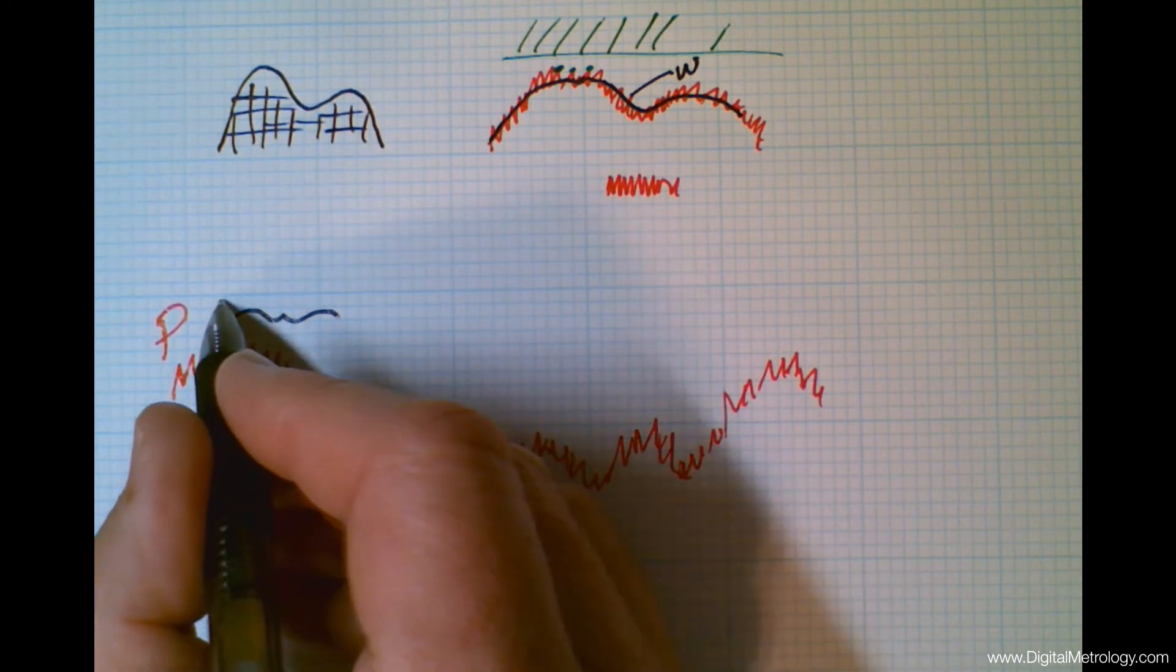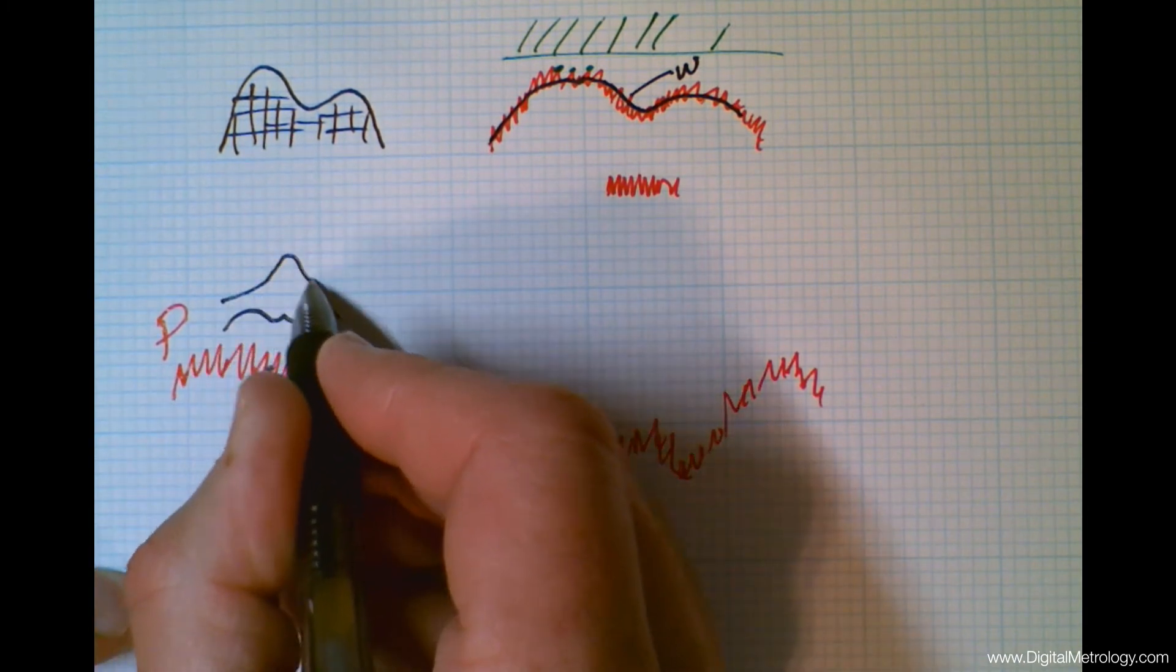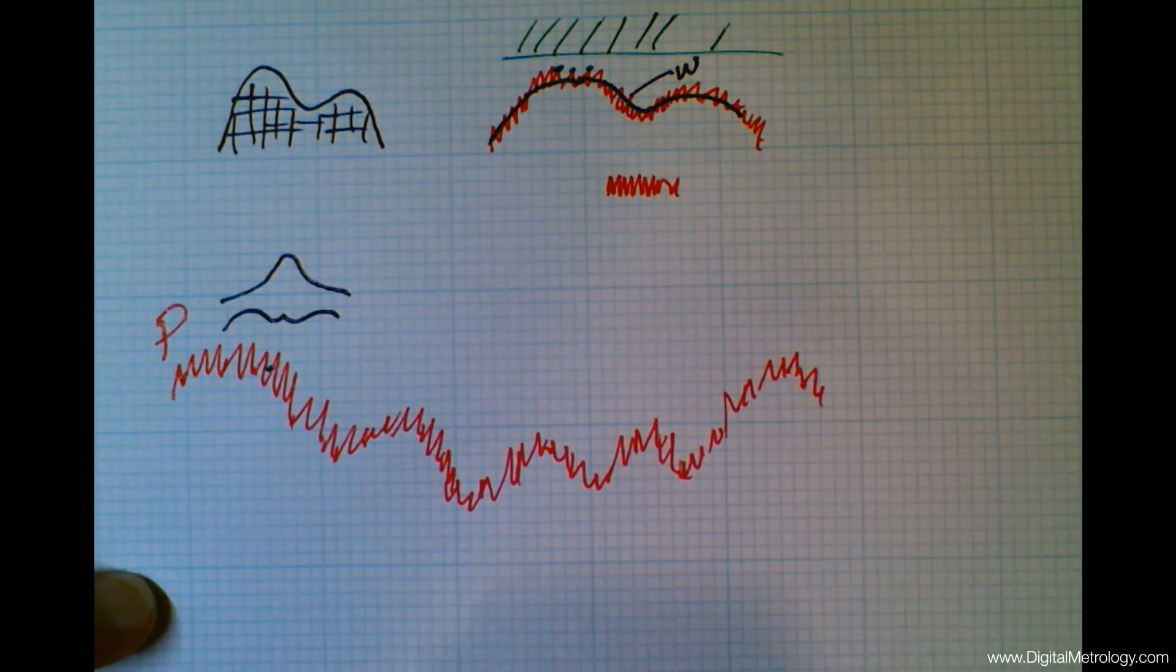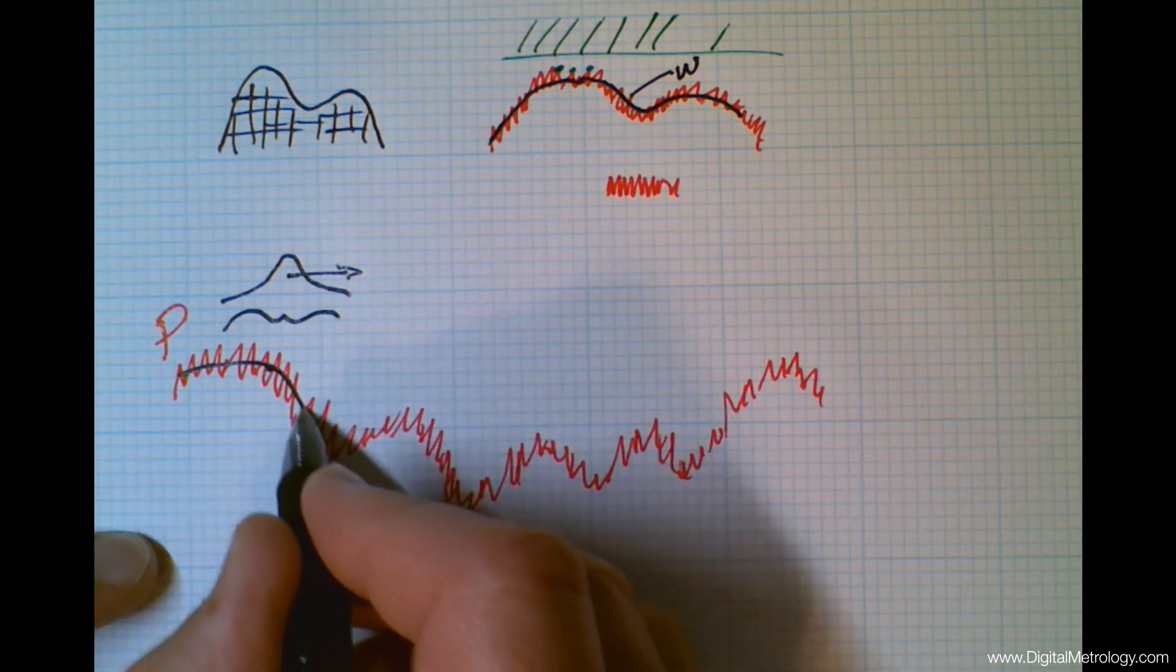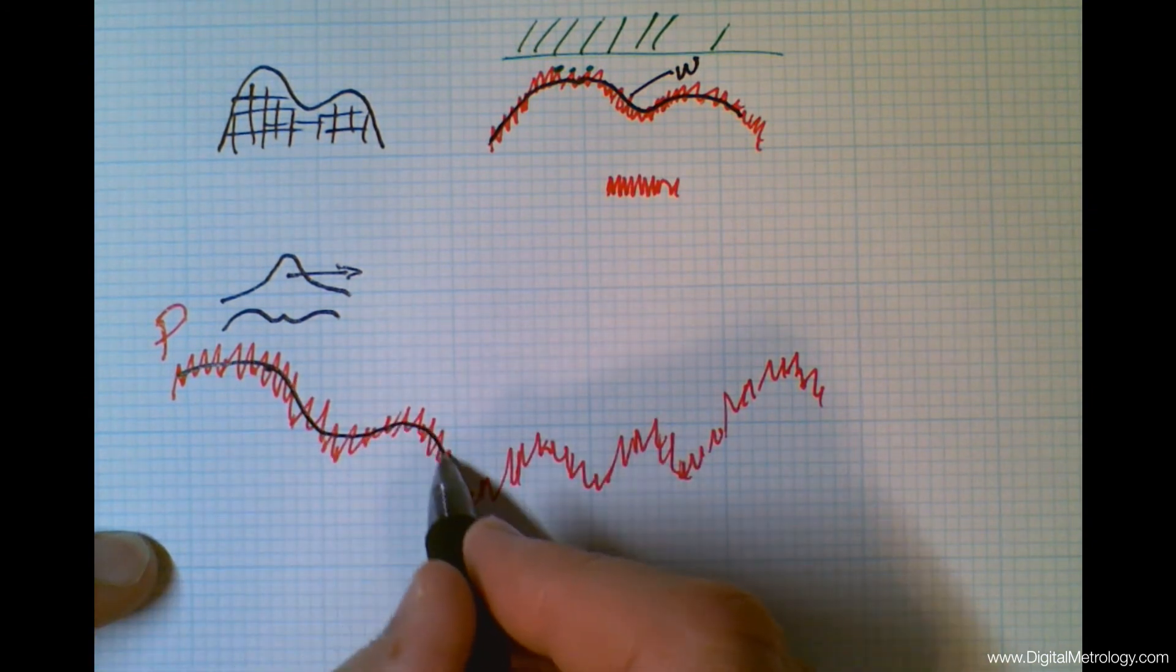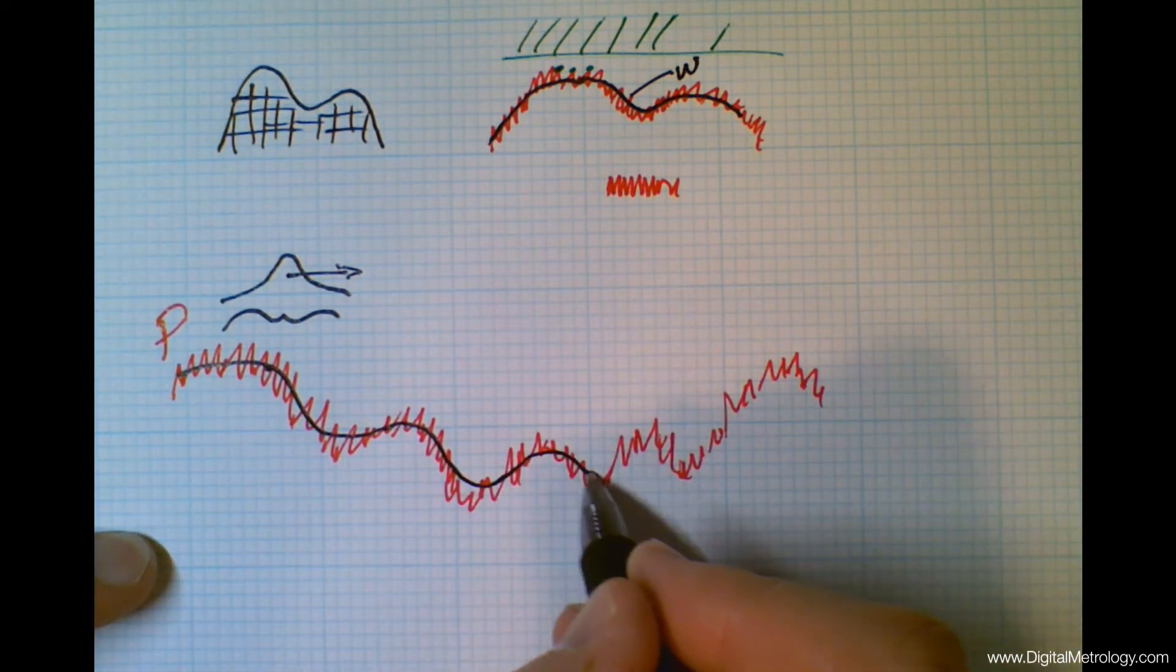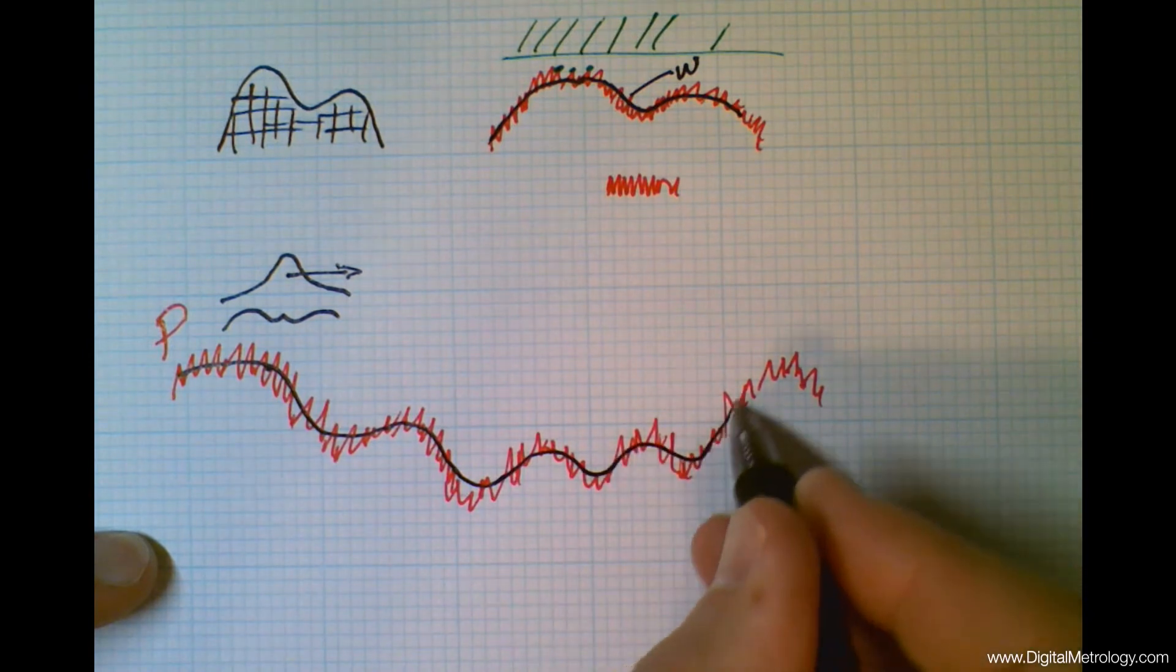Now we're going to do a special average. We're going to do a Gaussian weighted average where the middle points get a little more credit. But we're going to slide this average through the surface one point at a time. And as we do this, we will generate a smooth curve that is our waviness profile.